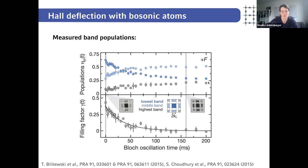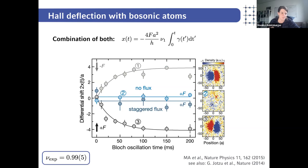To wrap up: using Floquet engineering techniques we can generate topological lattice models and mimic quantum Hall systems with bosonic charge-neutral atoms, simply using periodic driving protocols to engineer new Hamiltonians with interesting topological properties.